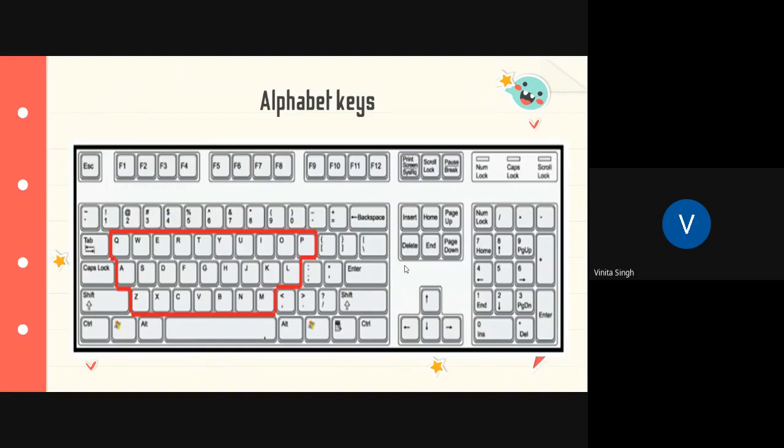The alphabet keys are the keys on which you see the alphabet from A to Z. These keys are used to write letters or words. The alphabet keys resemble the keys of a typewriter. Just like a typewriter, we have the keys on the keyboard too. This keypad is also known as the QWERTY keypad.